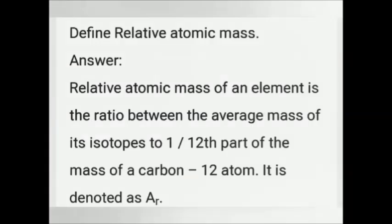Define relative atomic mass. The relative atomic mass of an element is the ratio between the average mass of its isotopes to 1/12th part of the mass of a carbon-12 atom. It is denoted as Aᴿ.